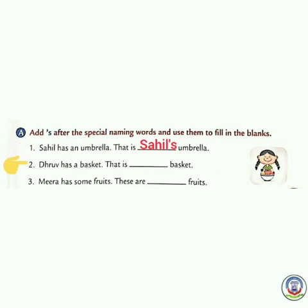Next: Dhruv has a basket. That is dash basket. What is the special naming word over here? Dhruv. So what will you write here? That is Dhruv's basket. You have to add apostrophe S after the special naming word.